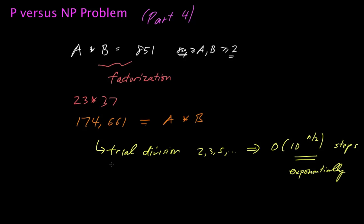So multiplication, what we've noticed, has this intriguing property. It's actually easy to multiply two numbers, but given their product, it seems to be hard to decompose that number into its constituent factors.